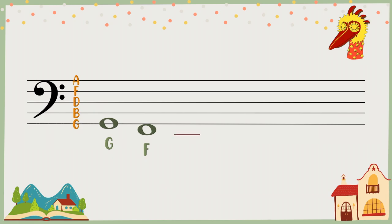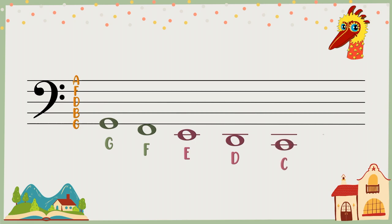Draw a ledger line, you'll have E. Under the ledger line, it's D. Draw a second ledger line, you'll get C. And below that, you'll have B.